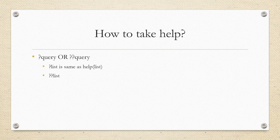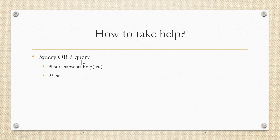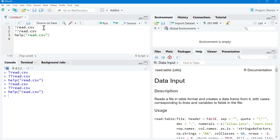Today we will see how to get help for any command or any package in R. To get help related to a specific function or command in R, we have the option of a question mark followed by the command name, or a double question mark followed by the command name, and it will provide you the required help. For example, if I want to get help related to the read.csv command, I can use the syntax: question mark read.csv.